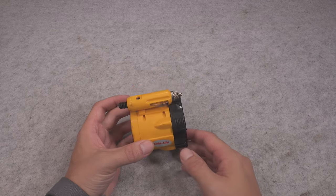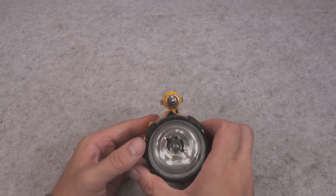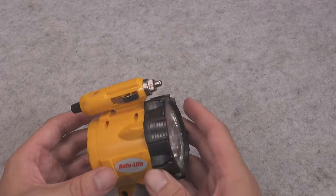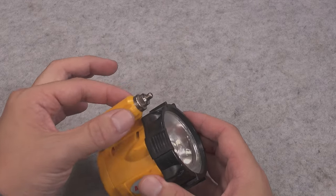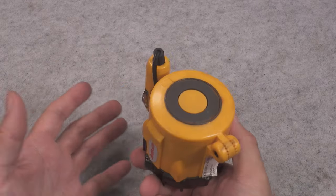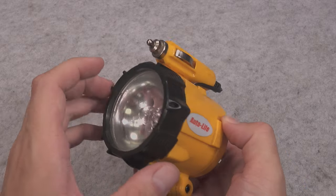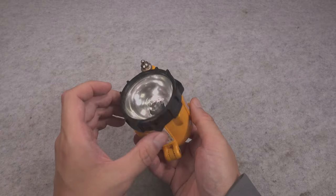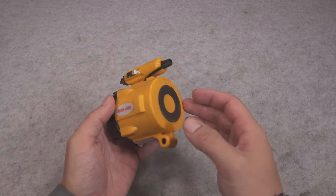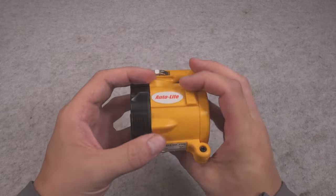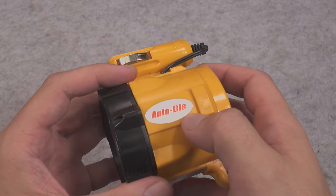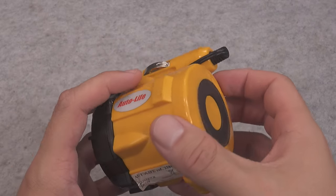It does not contain any battery, but on top we can find something that looks like a cigarette lighter plug. We do not have any cord yet. We've got our bulb, we've got our protective screen. It's got that beautiful yellow color. It's being called Auto Light, which makes sense.